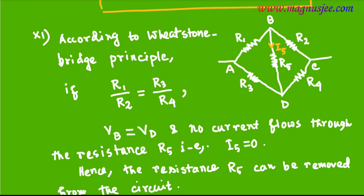After removal of resistance R5, in the modified circuit diagram, R1 and R2 are the two resistances above R5 and R3 and R4 are below R5. The ratio R1 by R2 equals R3 by R4, meaning the potentials VB and VD are the same, no current flows through R5, and hence current I5 equals 0.